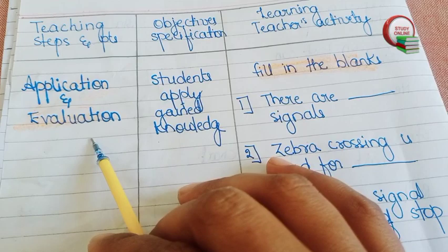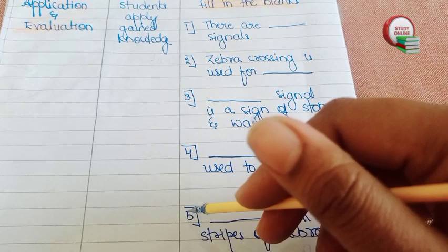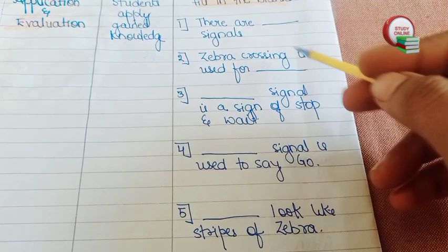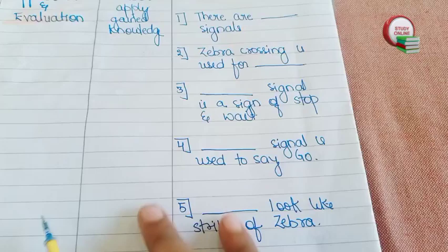This is the overall look of our lesson plan. Now here we will see the last page — application and evaluation. I have given five fill in the blanks here. Five is the maximum; don't exceed five questions. For example: there are dash signals; zebra crossing is used for dash; dash signal is a sign of stop and wait; dash signal is used to say go; zebra crossing looks like the stripes of a zebra. For home assignment, teacher has to give home assignment to students as perfection of knowledge.